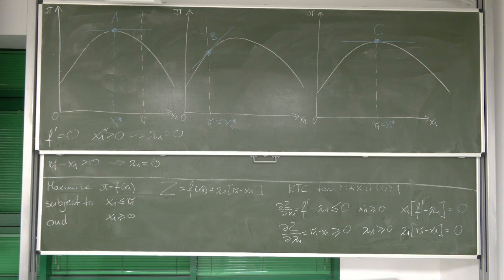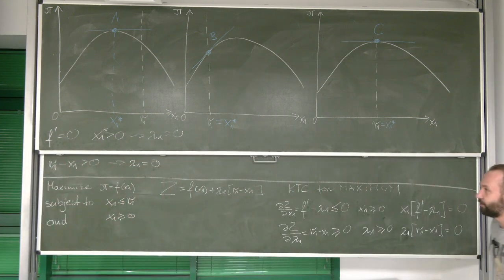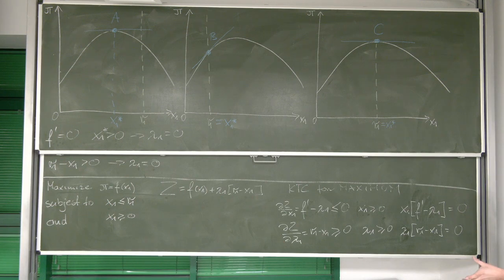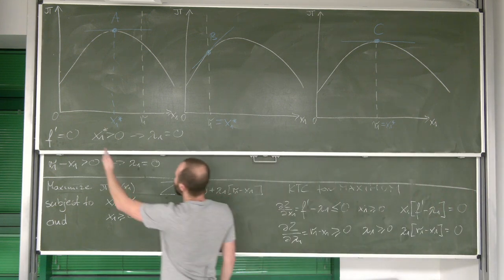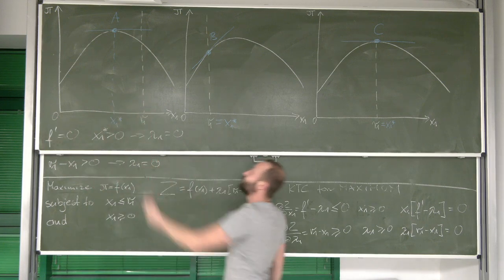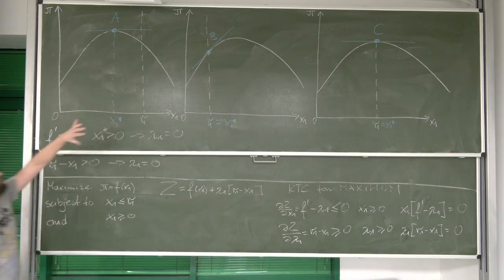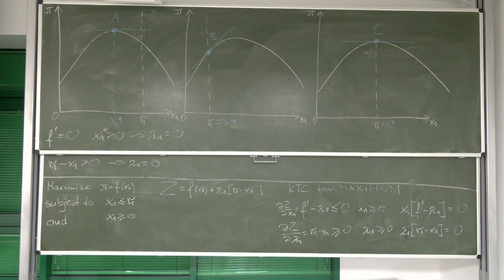And look, this actually is showing us that every time when we get lambda that is equal to zero, the restriction is non-binding. It means we still have some room to maneuver, and it means we've reached maximum before we got to the constraint.